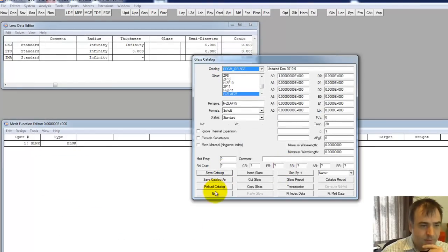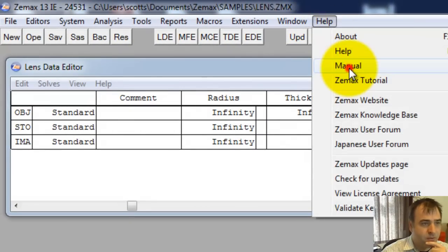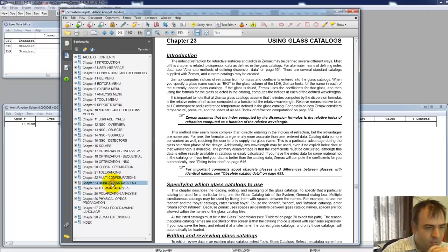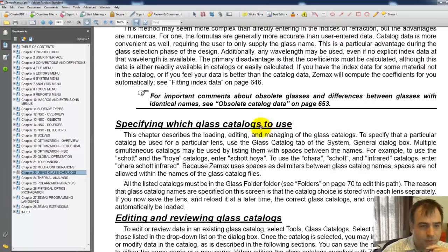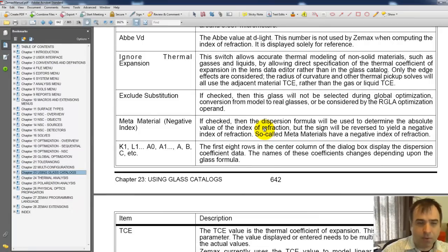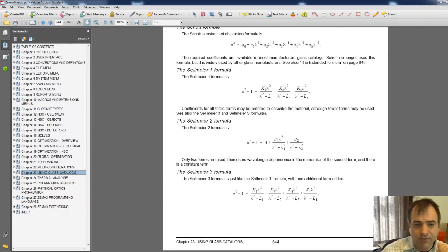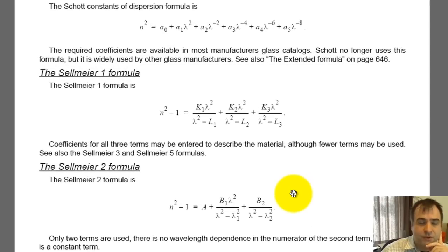Now let's talk about the dispersion formula a little bit. Let's just save this and go to the ZMAX manual. Not only is it going to show you where to go to understand all these dialogue boxes, but it's got the dispersion equations all nice and neatly packaged. It's chapter 23, using glass catalogs. I'm going to scroll down.